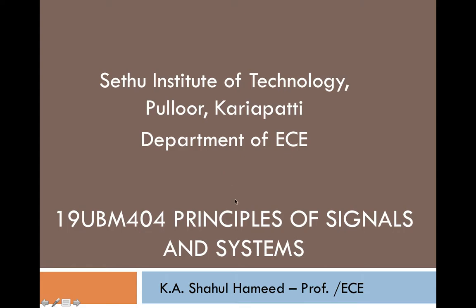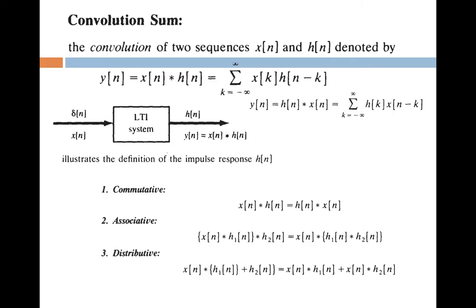Hi friends, today we are going to discuss about convolution summation. The convolution of two sequences x of n and h of n, denoted by y of n, is equal to x of n convolution h of n, which is equal to summation k from minus infinity to plus infinity of x of k into h of n minus k. It can also be written as summation k from minus infinity to plus infinity of h of k into x of n minus k.